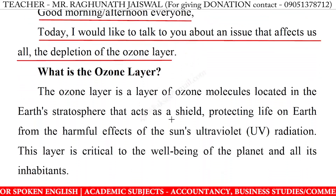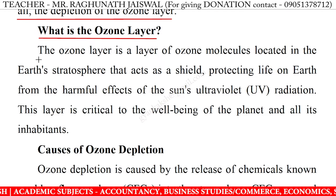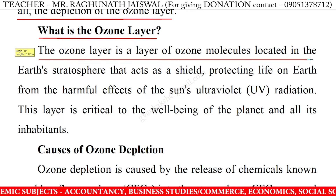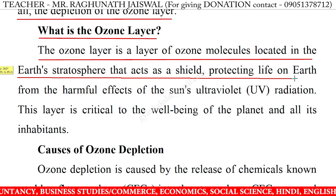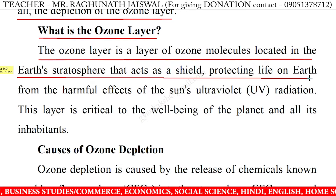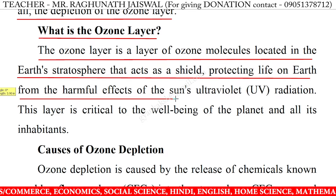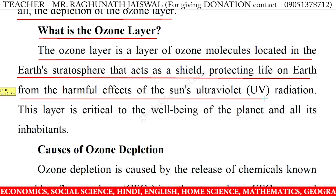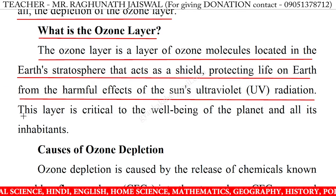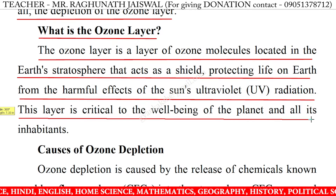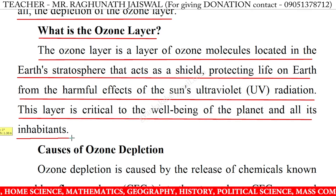What is the ozone layer? The ozone layer is a layer of ozone molecules located in the Earth's stratosphere that acts as a shield, protecting life on Earth from the harmful effects of the Sun's ultraviolet UV radiation. This layer is critical to the well-being of the planet and all its inhabitants.